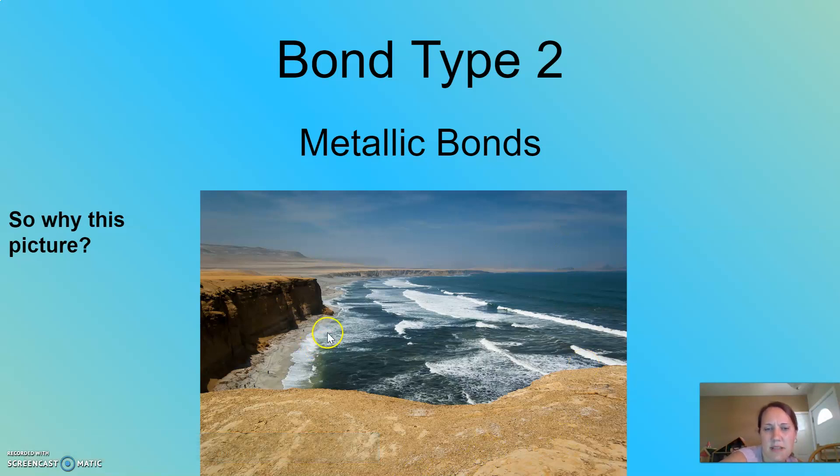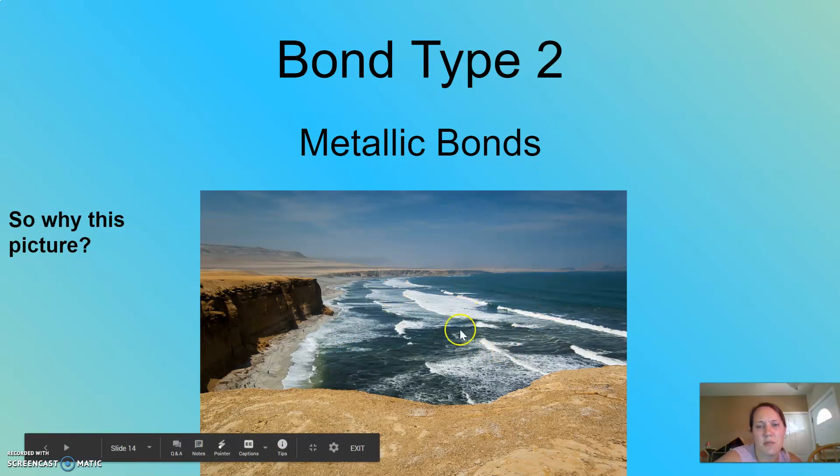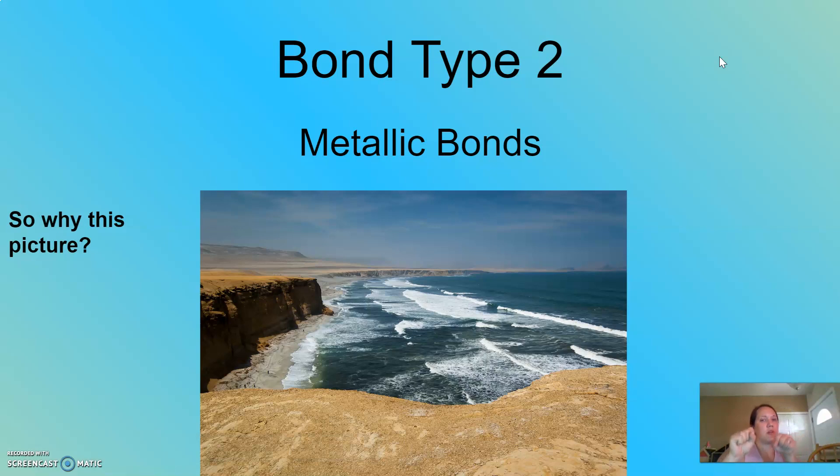The biggest thing to remember about metallic bonds is the sea of electrons that floats around the cations. That sea of electrons gives the metallic properties to metals. It gives them the ability to conduct. It gives them the ability to be malleable and ductile. It gives them the ability to have luster. So all of those properties we talked about with metallic bonds are related to the sea of electrons, just like the properties of ionic substances are related to the strength of the lattice energy holding them together, just like the properties of covalent substances are related to the strength of the intermolecular force that's holding the molecules together. So that's the biggest thing to remember about metallic bonds.